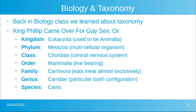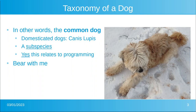If you remember your biology, we are talking about the taxonomy of a dog. The common domesticated dogs are all Canis lupus — lupus being a subspecies. And yes, all of this relates to programming, so just bear with me.